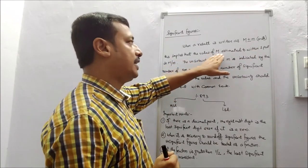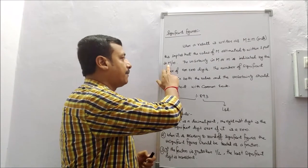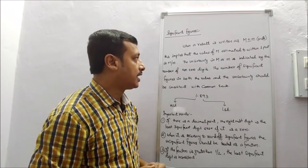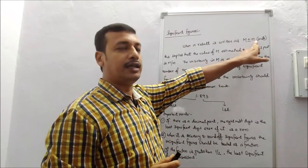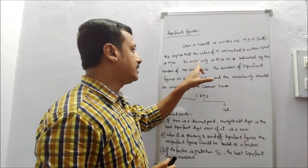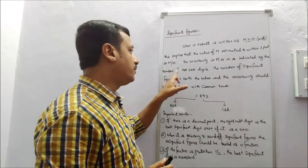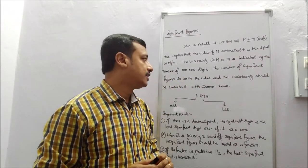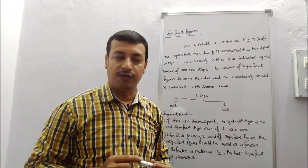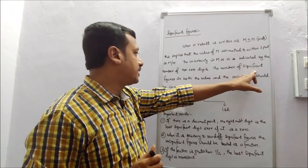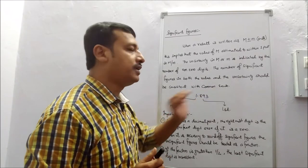That means the value of capital M, if we write it in one part, it will be written in terms of capital M divided by small M. The uncertainty in capital M — this is the uncertainty or error term — is indicated by the number of non-zero digits. How many non-zero digits are there will define its uncertainty.